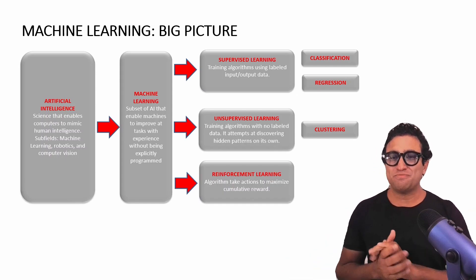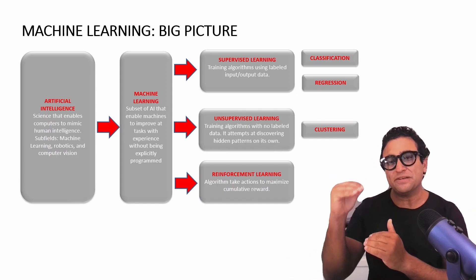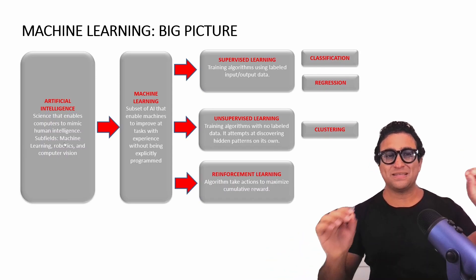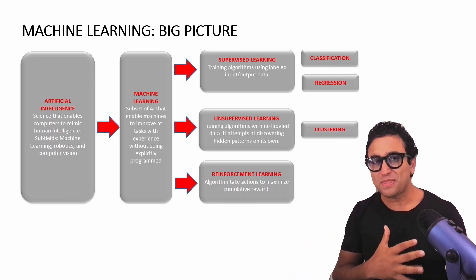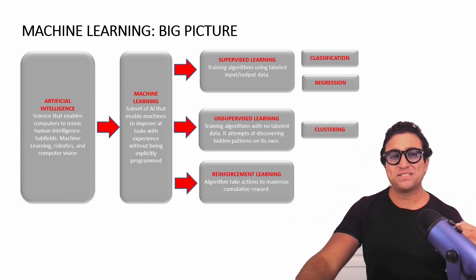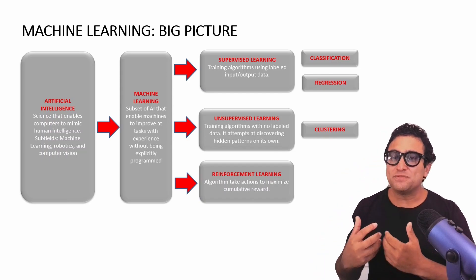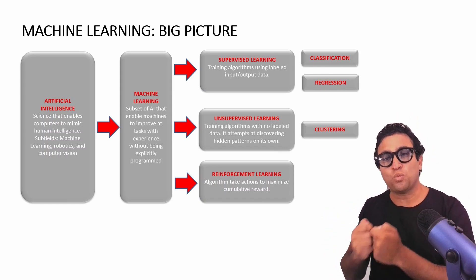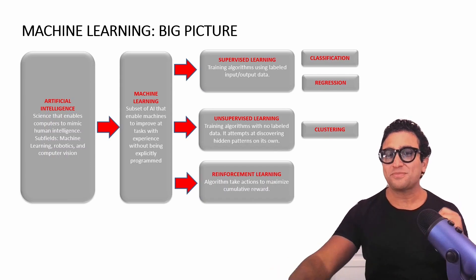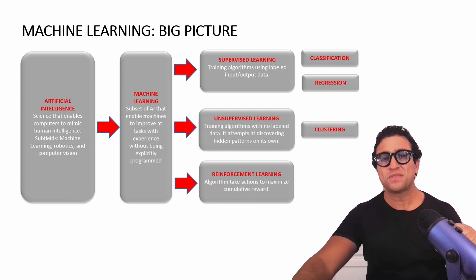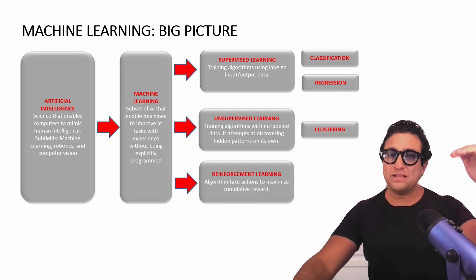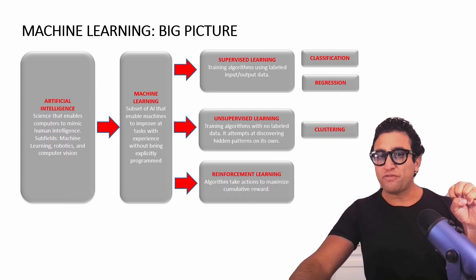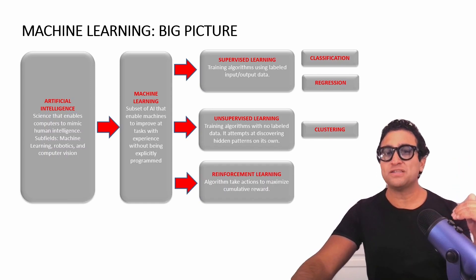Within machine learning, there are three different categories. AI is the science that enables computers to mimic human intelligence. Machine learning is a subset of AI that enables machines to improve at a given task through experience without being explicitly programmed. Within machine learning, we have three categories: supervised learning, unsupervised learning, and reinforcement learning. Within supervised, we have classification and regression; within unsupervised, we have clustering.